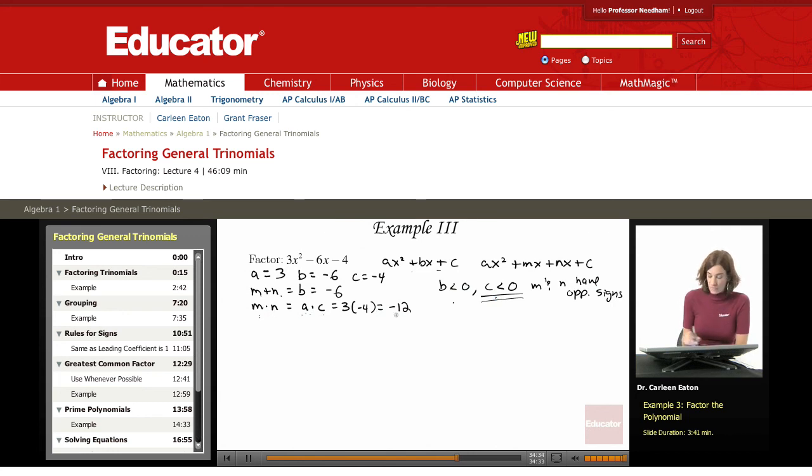m times n gives me negative 12, so they have to have opposite signs. Okay, so I need to find the factors of negative 12. And I want to figure out their sum, and I'm looking for a sum that is going to equal negative 6.